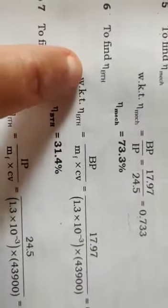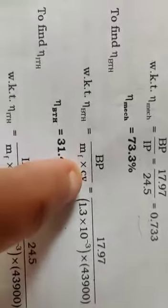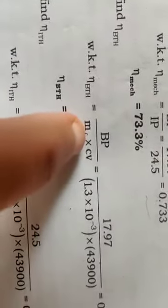To find brake thermal efficiency: brake thermal efficiency is BP divided by mass of fuel times calorific value. Here BP is there, so mass of fuel should be per second. 17.97 divided by 1.3 times 10 to the minus 3 times 43,000, you get 0.314, that is 31.4%.